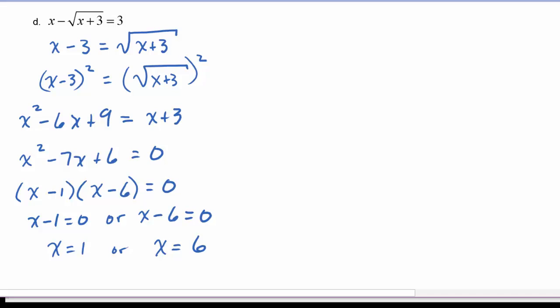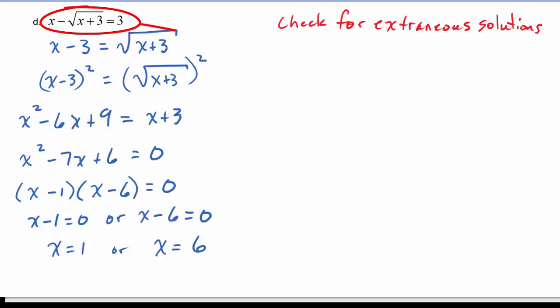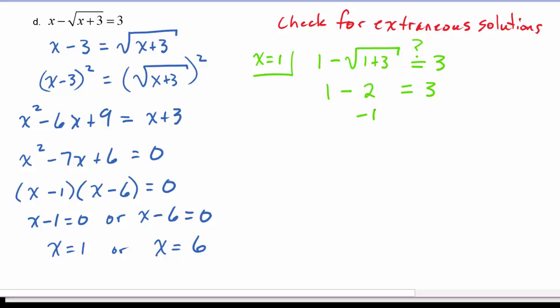Now remember, because we squared both sides, we have to check for extraneous solutions. So we plug in to the original equation. Let's check x is equal to 1. If we plug that into the original equation, we get 1 minus the square root of 1 plus 3, and we're asking ourselves if that equals 3. So we have 1 minus, well, this is going to be the square root of 4, which of course is 2, and 1 minus 2 is negative 1, which definitely does not equal 3. Therefore we have to reject the x equals 1 solution.